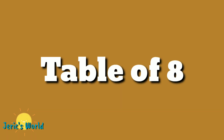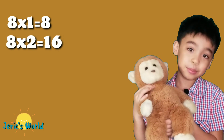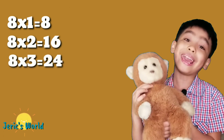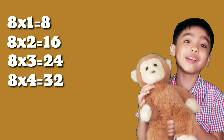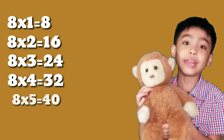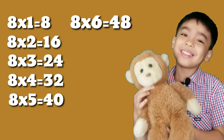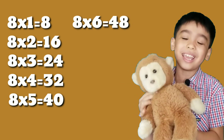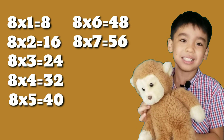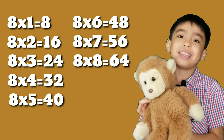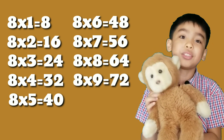Table of 8. 8 times 1 equals 8. 8 times 2 equals 16. 8 times 3 equals 24. 8 times 4 equals 32. 8 times 5 equals 40. 8 times 6 equals 48. 8 times 7 equals 56. 8 times 8 equals 64. 8 times 9 equals 72.